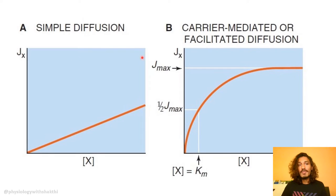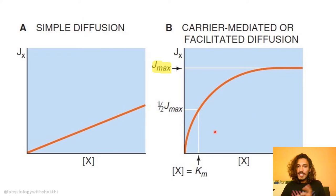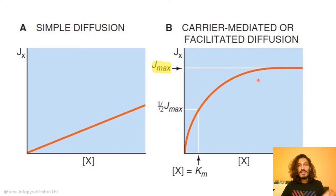You can see the difference between facilitated and simple diffusion on the graph — concentration on the x-axis, and J (rate of diffusion) on the y-axis. As concentration increases, rate of diffusion increases. In facilitated diffusion, it keeps increasing until it reaches a threshold beyond which it cannot increase — it gets saturated. Saturation kinetics applies here because the carriers are limited in number. Once all carriers are occupied, the rate cannot increase further.